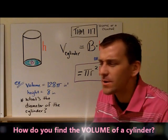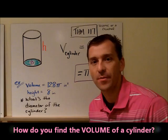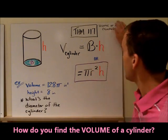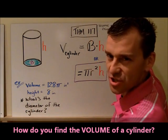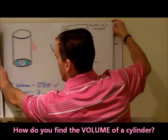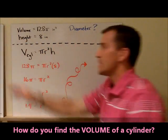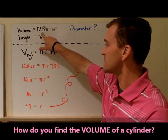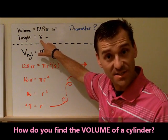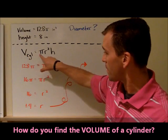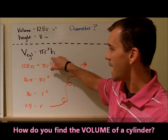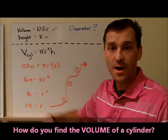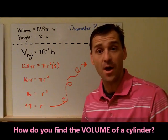Welcome back. Did you get it right? Diameter is what we're looking for, volume is 128π, height is 8. Since it's a cylinder, I'm going to use this formula: πr²h. I'm going to plug in everything I possibly can that I know. I know the volume and the height.